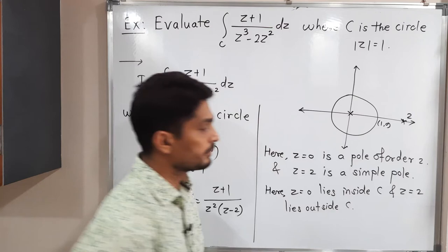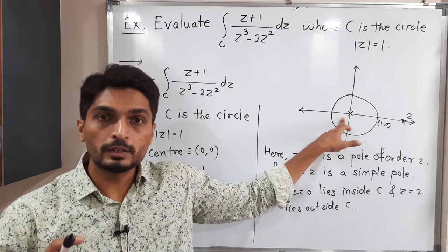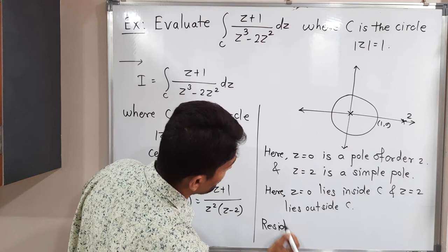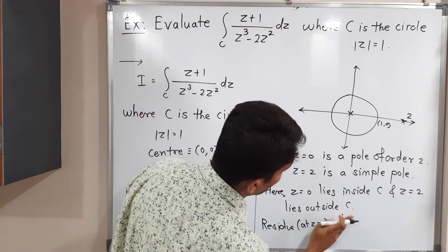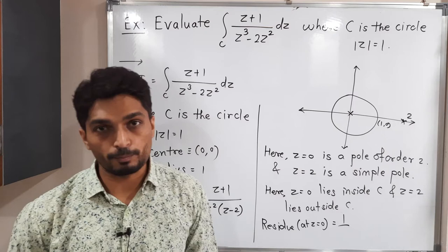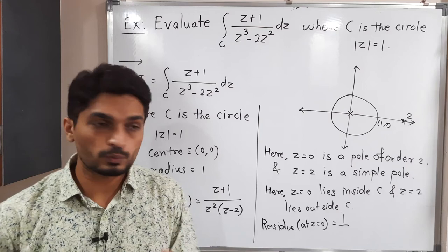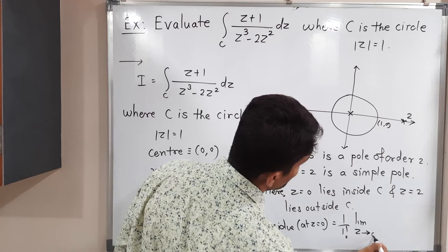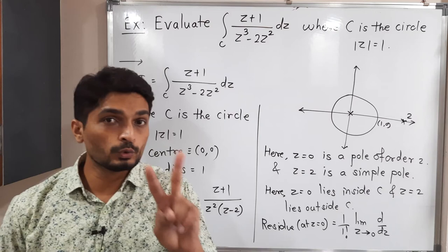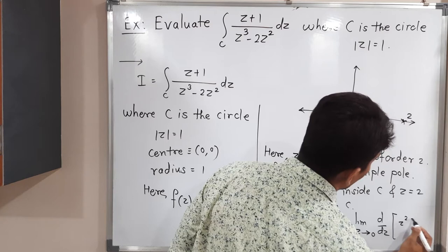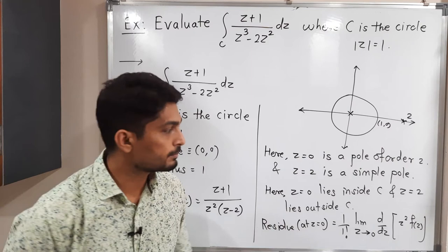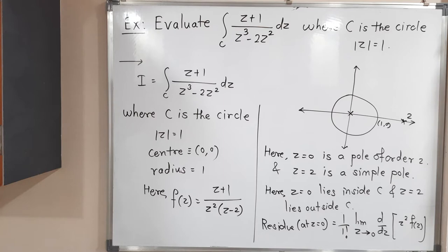We have to find the residue only at Z = 0, since it lies inside. So, residue at Z = 0 — since this is a pole of order 2, we use the formula: (1/(n−1)!) × limit as Z→0 of the (n−1)th derivative of (Z − Z₀)ⁿ F(Z), where n = 2. So we need 1/(1!) times the limit as Z→0 of the first derivative of Z² · F(Z).